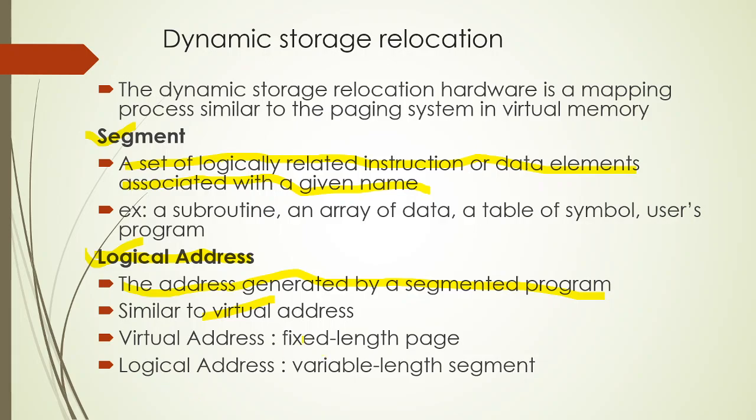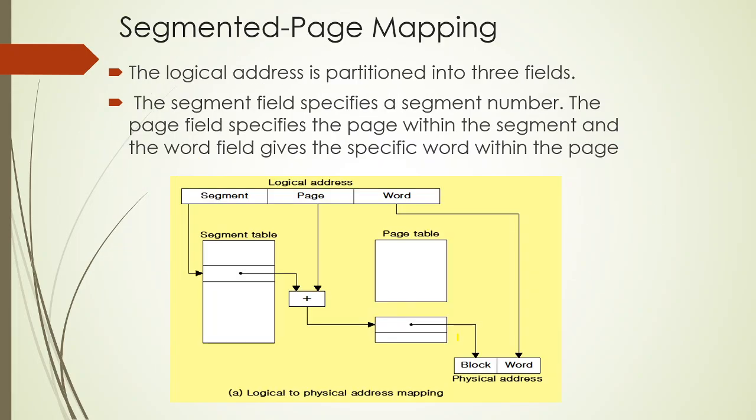The virtual address uses a fixed-length page. For example, if we have a memory size of 32K and we take a page size of 1K, we divide it into 32 pages. The page is a fixed-length page. The segmented address is a logical address. This is about dynamic storage relocation, segments, and logical addresses — the actual process of segmented page mapping.